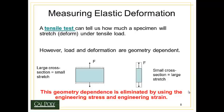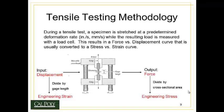There's a geometry dependence that we don't like to have when we talk about material properties. We only want to look at material properties that are independent of geometry. So we can eliminate this geometry dependence by using something called the engineering stress and engineering strain. In a tensile test, we have a tensile specimen, this dark gray area here, held between two grips.